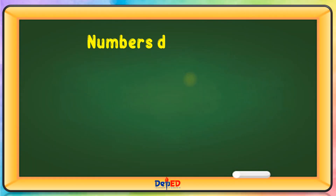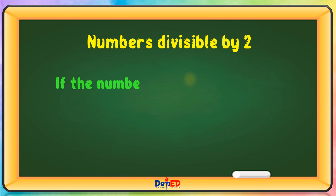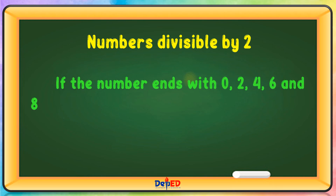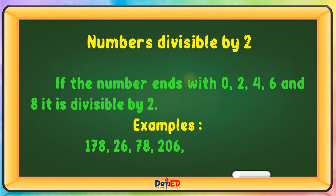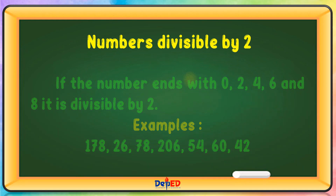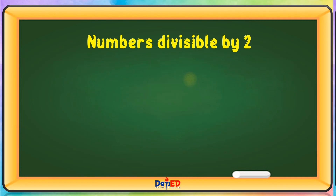Numbers divisible by 2: If the number ends with 0, 2, 4, 6, and 8, it is divisible by 2. Examples: 178, 26, 78, 206, 54, 60.